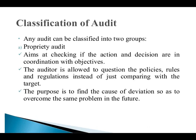Regarding the classification of audit: first is the proprietary audit, which aims at checking if actions and decisions are in coordination with the objectives. The auditor is allowed to question policies, rules, and regulations instead of just comparing with the target. The purpose is to find the cause of deviation so as to overcome the same problem in the future — whether the deviation is in cost, profits, revenues, or time. The reasons may include unrealistic goals set earlier.